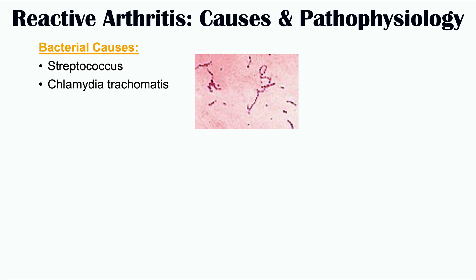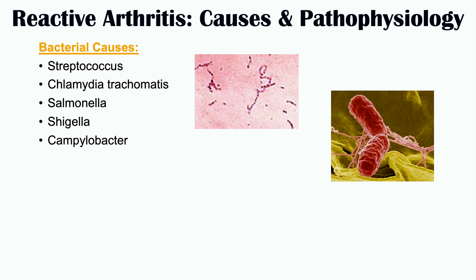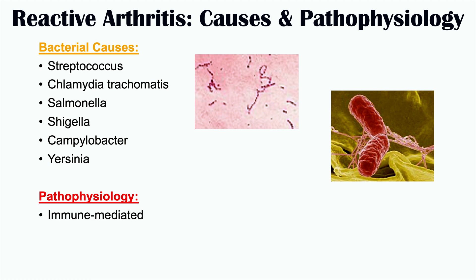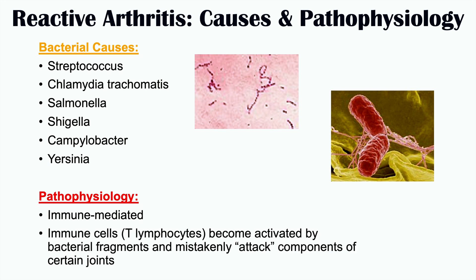Another bacterial infection that can lead to reactive arthritis is Chlamydia trachomatis, a sexually transmitted disease, so patients who have chlamydia can progress to reactive arthritis. Other bacterial causes include Salmonella, Shigella, Campylobacter, and Yersinia. The pathophysiology is immune-mediated: T lymphocytes become activated by bacterial fragments, then mistakenly attack components of certain joints, leading to inflammation even though no bacteria are present in the joint itself.